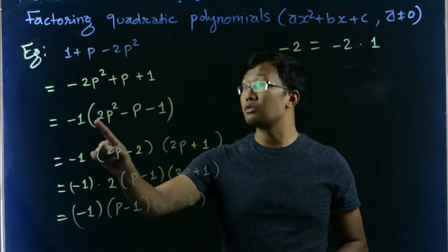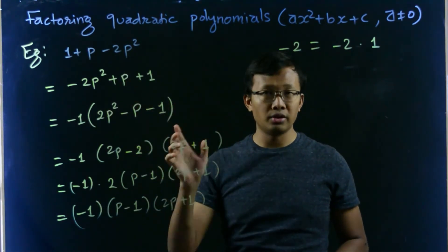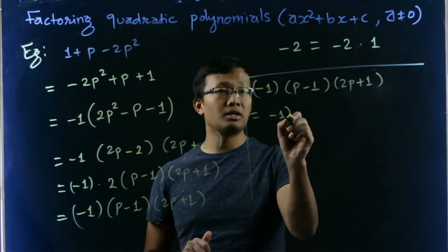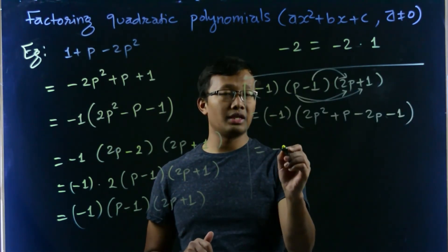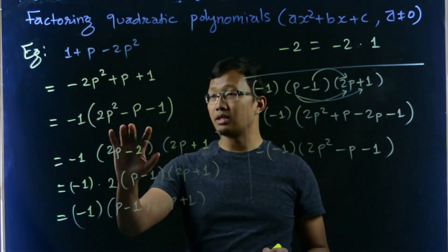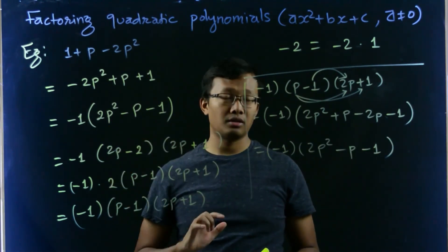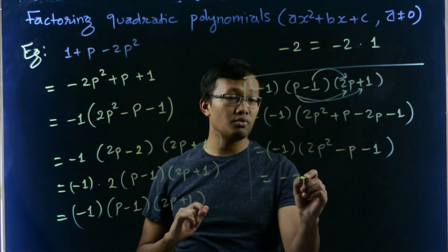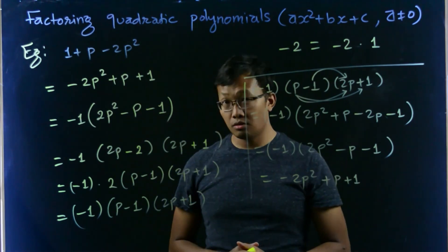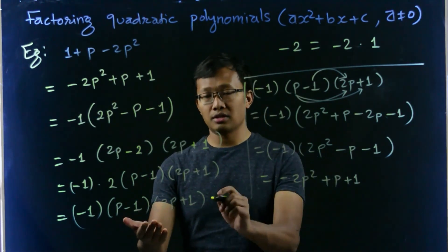But negative 1 is inherent in here, so we don't ignore that. And this will give us negative 1. Thus we get the same factor. And if we multiply this thing, it is negative 2p squared plus p plus 1. So our factorization is correct.